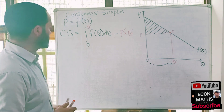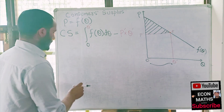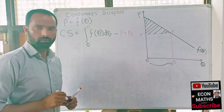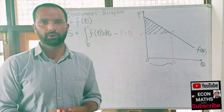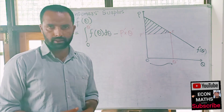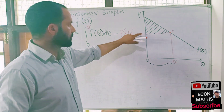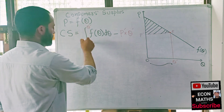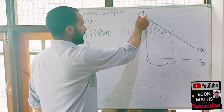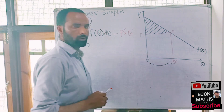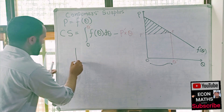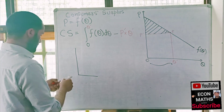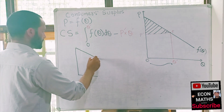Graphically, this means: if I plot this region on a graph, this region means the prices that the consumers are willing to pay, and this region represents the prices that they actually pay — that is, the equilibrium price. The area under the demand curve up to equilibrium quantity Q' gives us the consumer surplus region.